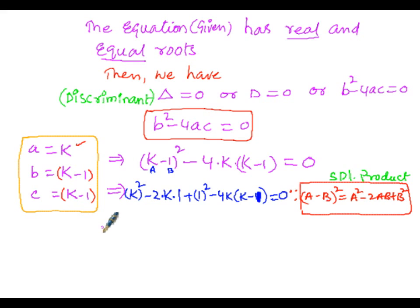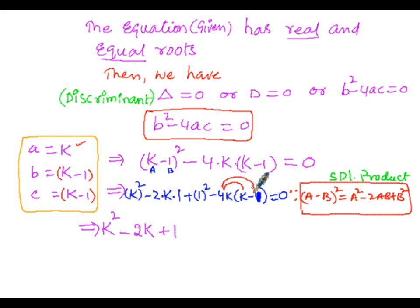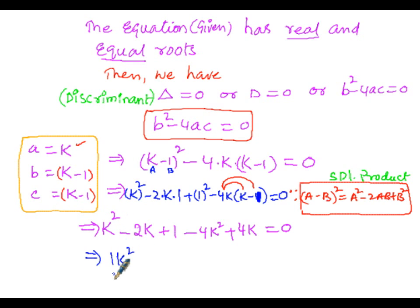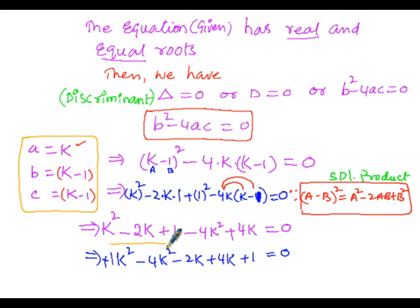Expanding further: k² - 2k + 1 - 4k² + 4k = 0. Collecting like terms: the k² terms give 1 - 4 = -3, and the k terms give -2k + 4k = +2k. So we have -3k² + 2k + 1 = 0.